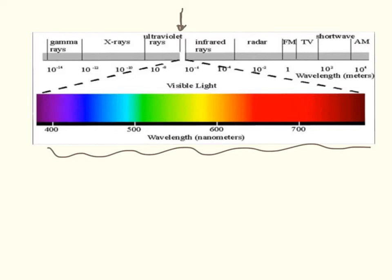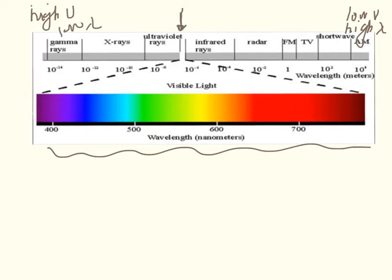On the right side are all the things with a low frequency, or a high wavelength. And everything over on the left are things with high frequency or low wavelengths. The higher the frequency, the more energy it has, and really the more dangerous it is.